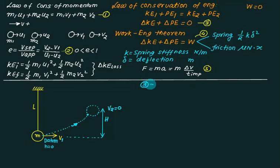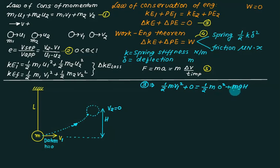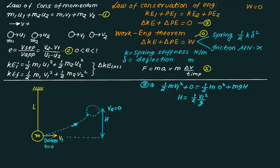Applying the law of conservation of energy: one-half mv1 squared plus zero equals zero plus mgH. Cancelling m, we get H equals v1 squared divided by 2g. This gives the theoretical height to which the bob rises. In practice, air resistance will cause it to rise to a somewhat lower height, so the assumption is no air drag. The bob swings through angle theta.